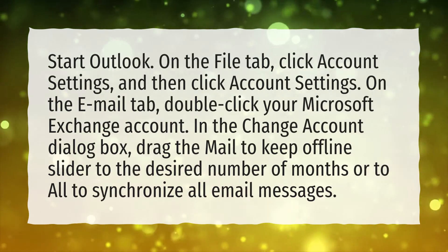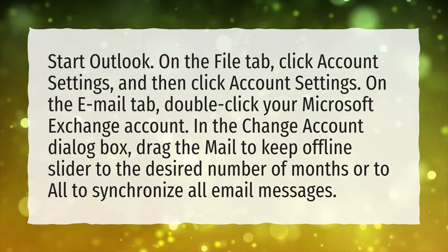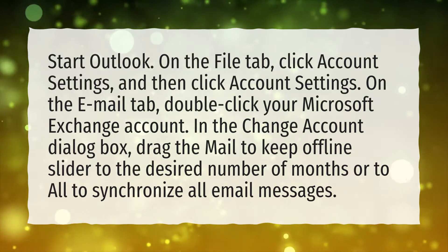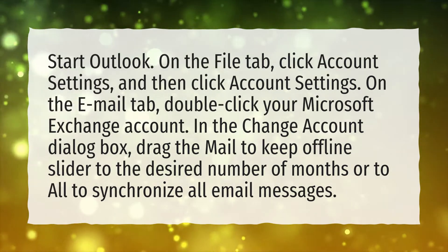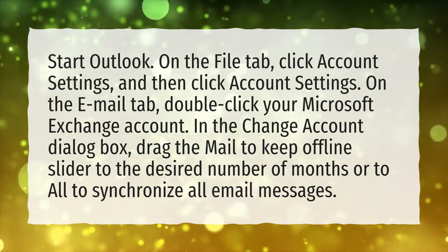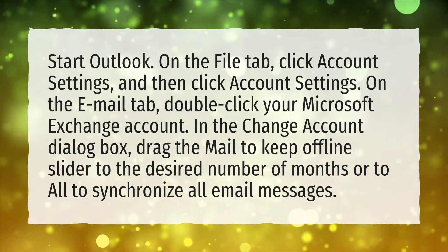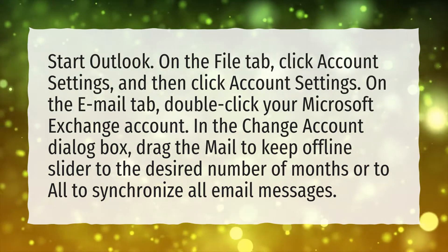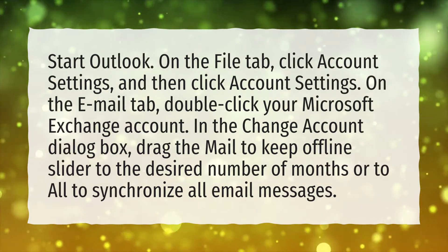Start Outlook. On the File tab, click Account Settings, and then click Account Settings. On the Email tab, double-click your Microsoft Exchange account. In the Change Account dialog box, drag the Mail to Keep Offline slider to the desired number of months, or to All to synchronize all email messages.